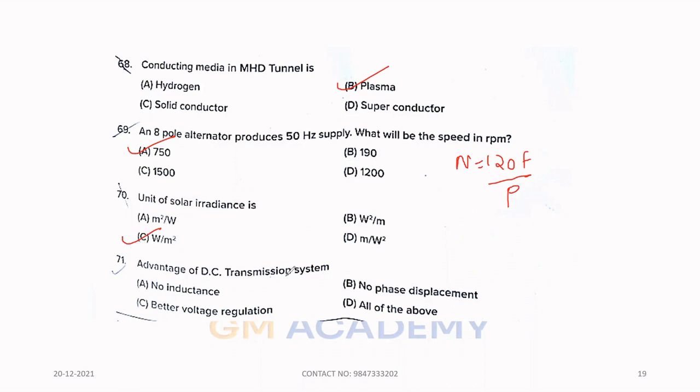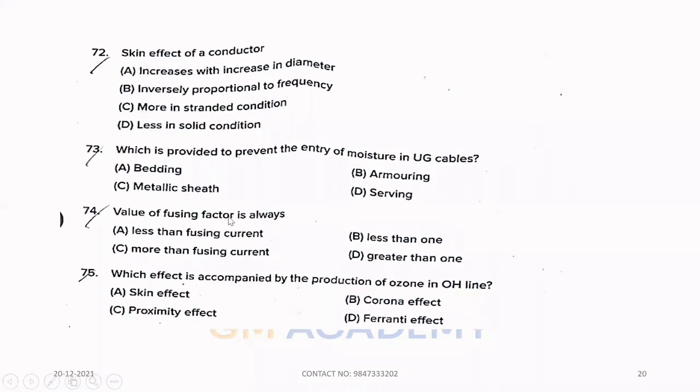Seventy-one. Advantages of DC transmission system. No inductance, no phase displacement, better voltage regulation. So, option D, all of the above. Seventy-two. Skin effect of a conductor. Skin effect increases with an increase in diameter. Option A is the correct answer.